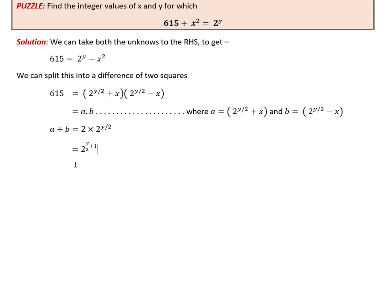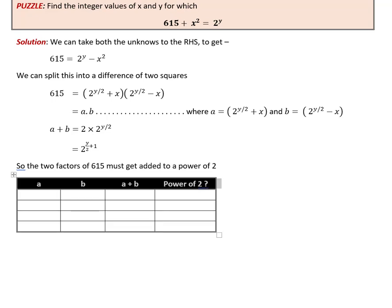So that gives us our first useful insight: we have to split this 615 into two factors such that they add to some power of 2. So you can start listing these factors into a kind of table. We'll be tabulating the first factor a, the second factor b, their sum, and then checking whether the sum is a power of 2 or not.